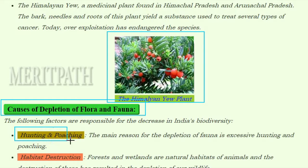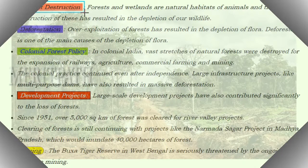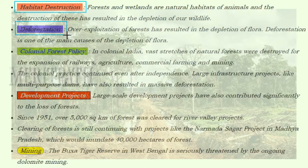The main reason for the depletion of fauna is excessive hunting and poaching. Forests and wetlands are natural habitats of animals, and the destruction of these habitats has resulted in the depletion of wildlife. Over-exploitation of forests through deforestation is one of the main causes for the depletion of flora.